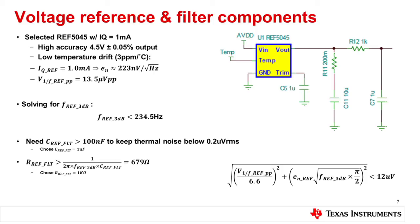To pick the snubber network resistor — the filter resistor — we use 1 over 2π RC. The limiting bandwidth for the filter gives an R of 679 ohms. So we round up to the next standard value and pick 1 kilohm, which is exactly what we do.